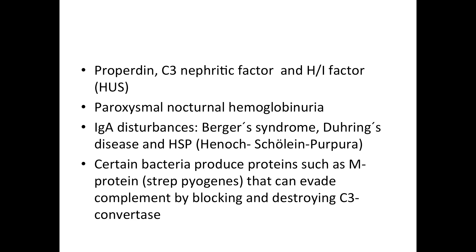Paroxysmal nocturnal hemoglobinuria is an important disease caused by a defect in the PIG-A gene, leading to a defective GPI anchoring protein. This results in loss of decay-accelerating factor (CD55) and protectin (CD59), which normally down-regulate complement attack on your own blood cells. The defect causes hemoglobinuria, along with leukocyturia and thrombocytopenia.